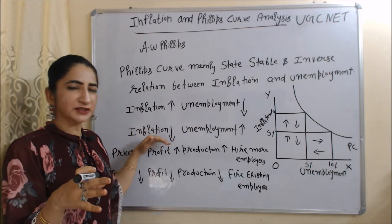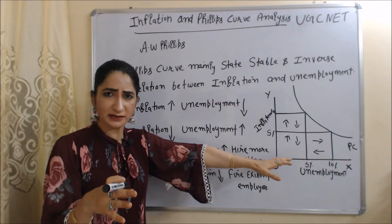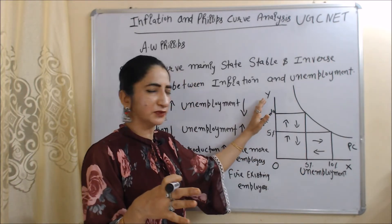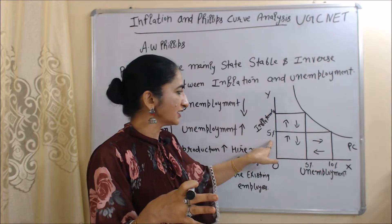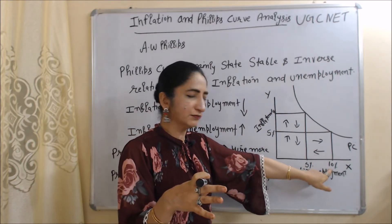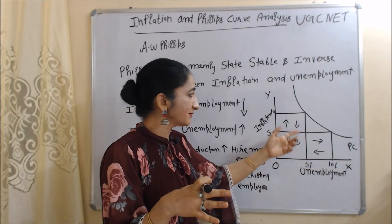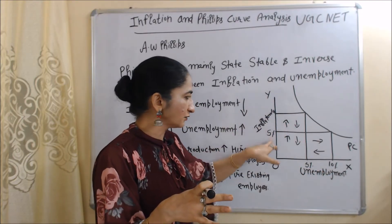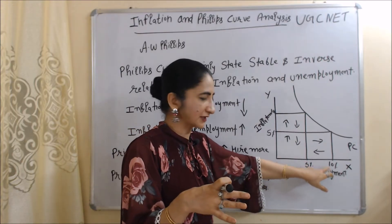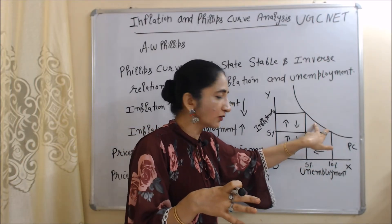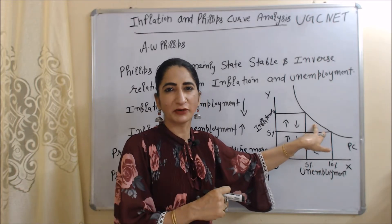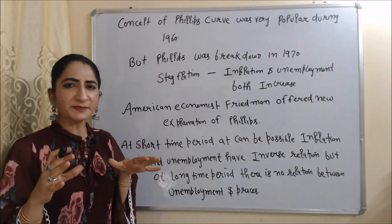You can see this in the diagram. On the x-axis we have unemployment and on the y-axis we have inflation. When inflation increases from 5 to 10 percent, unemployment falls from 10 to 5 percent. Similarly, when inflation falls from 10 to 5 percent, unemployment increases from 5 to 10 percent. This downward-sloping curve is called our Phillips Curve, which shows the inverse relation between unemployment and inflation.